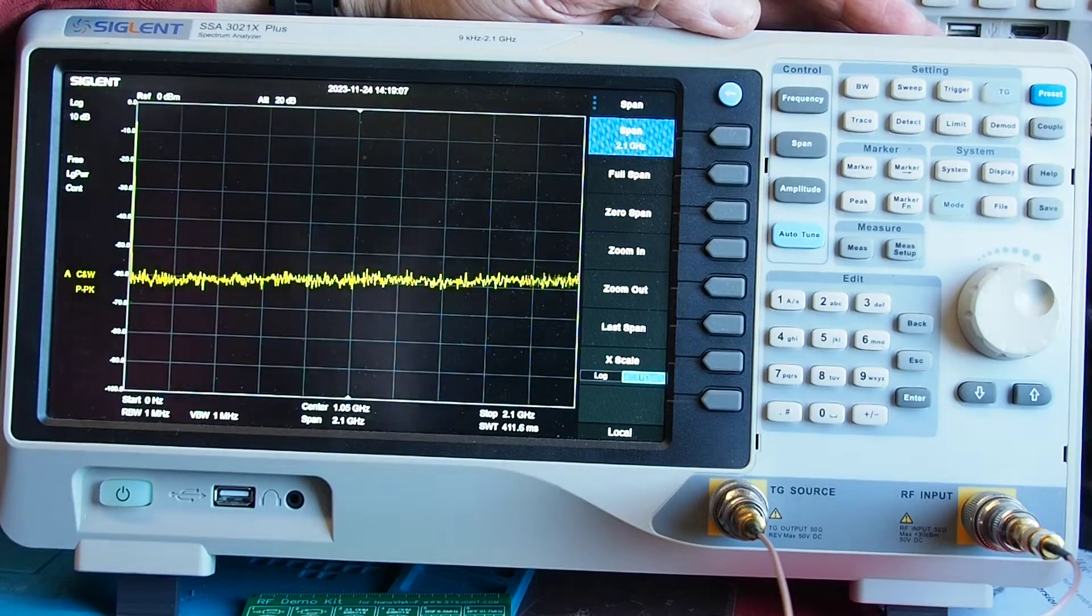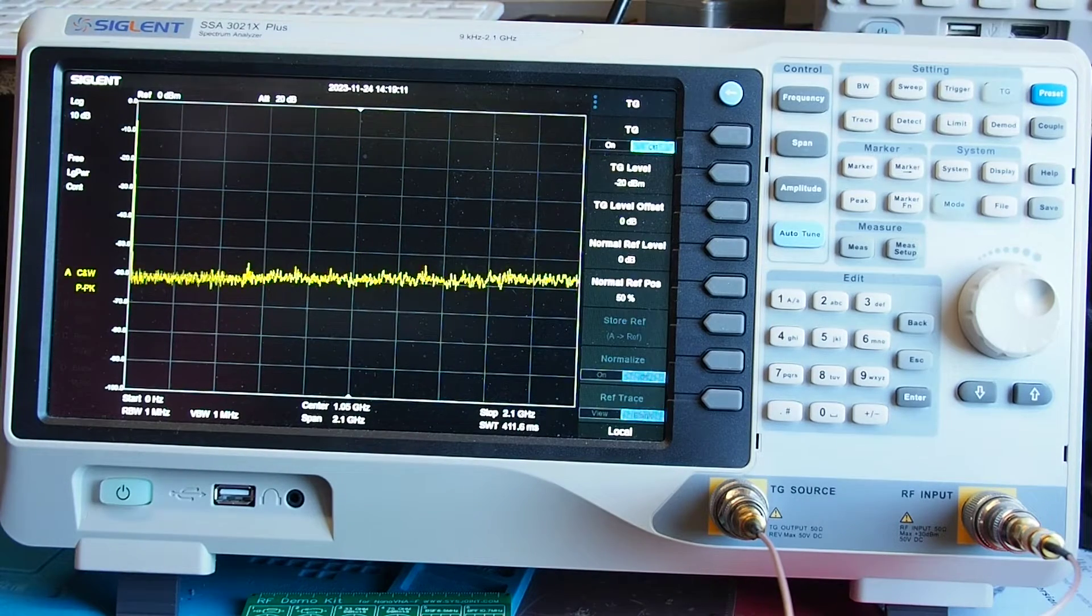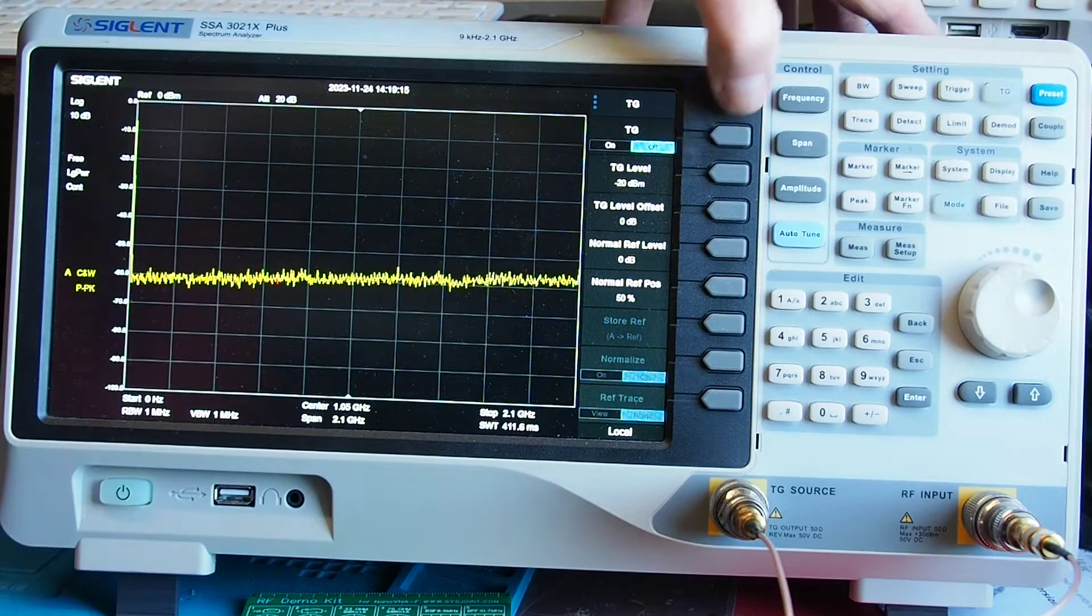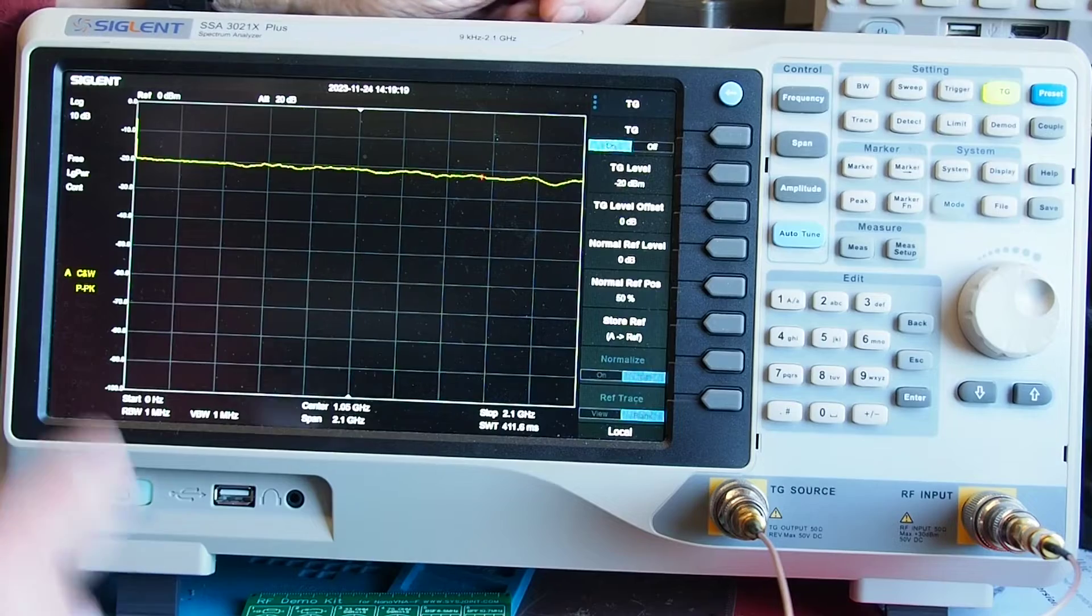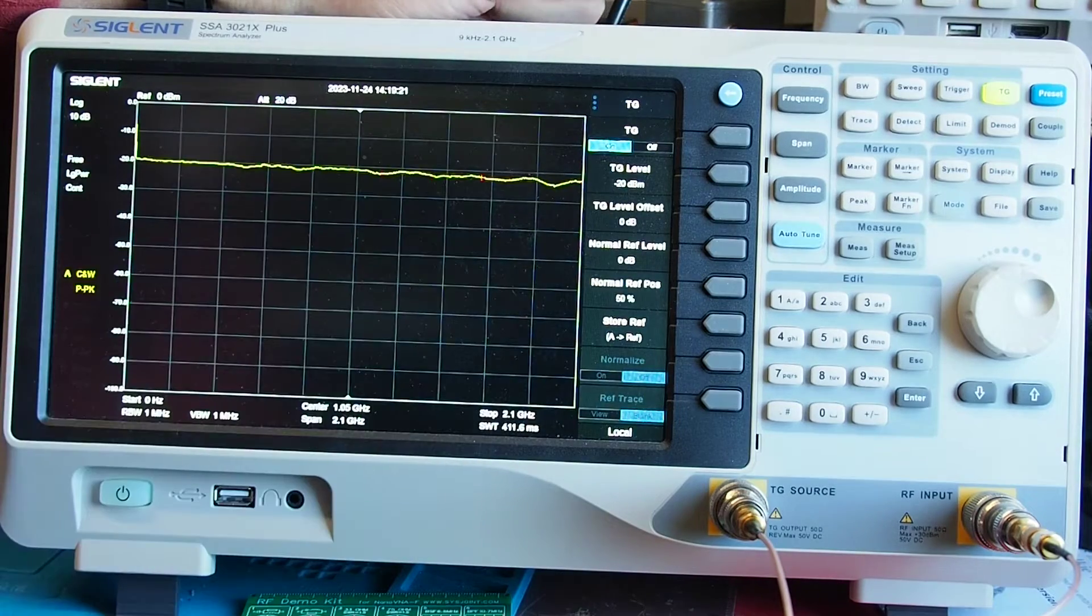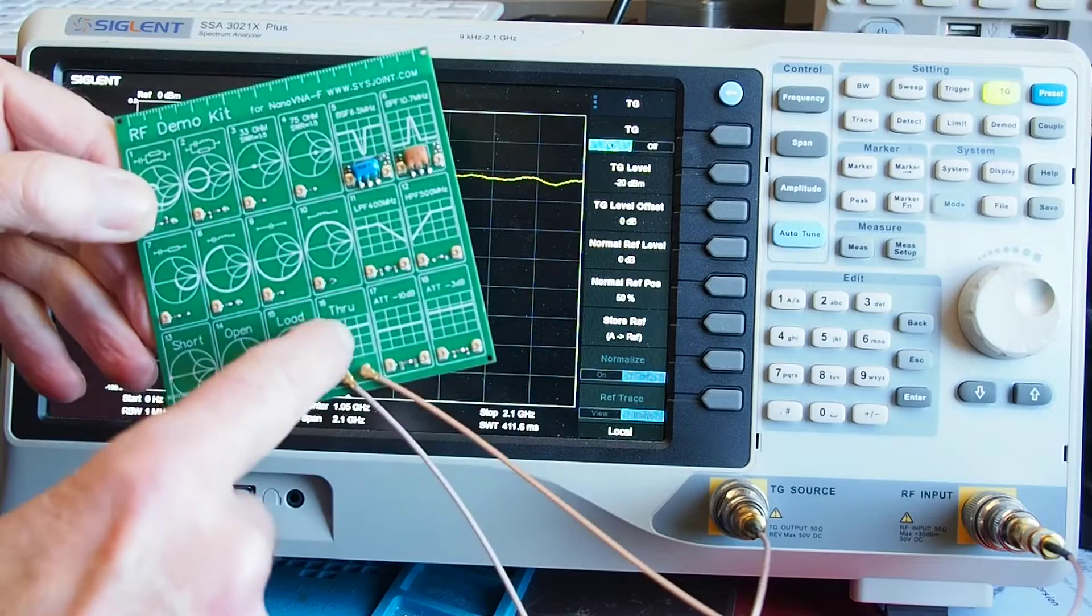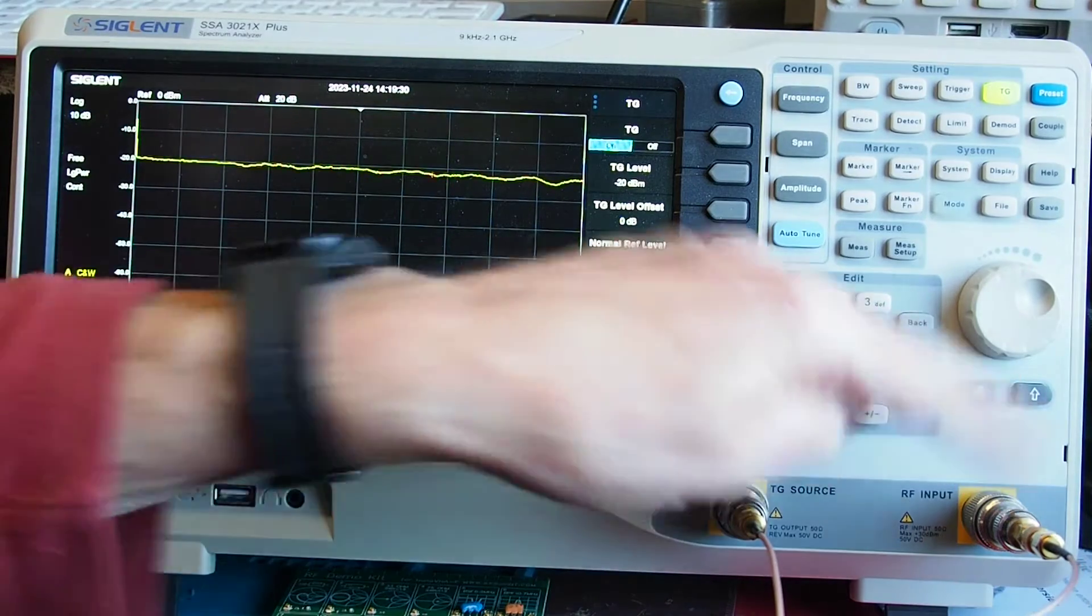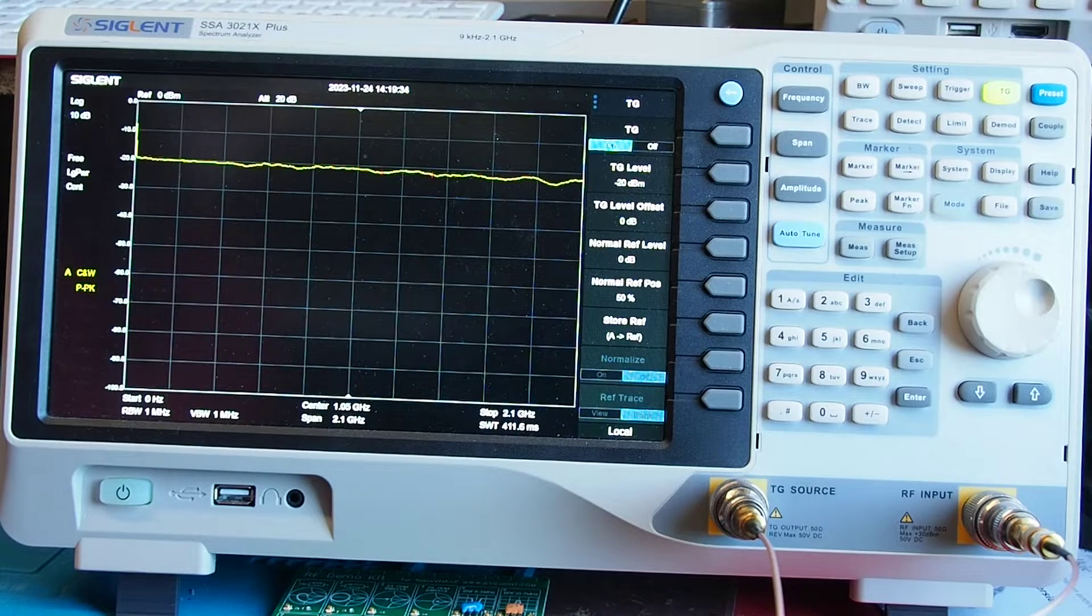So what we're going to do is we'll just look at the return, the tracking generator menu here and I'm going to switch the tracking generator on so if you watch the trace as I do that now and now we've got a signal if you like and although this is actually connected on the through connection here so its output is connected directly to input even so we haven't got an exactly straight line.